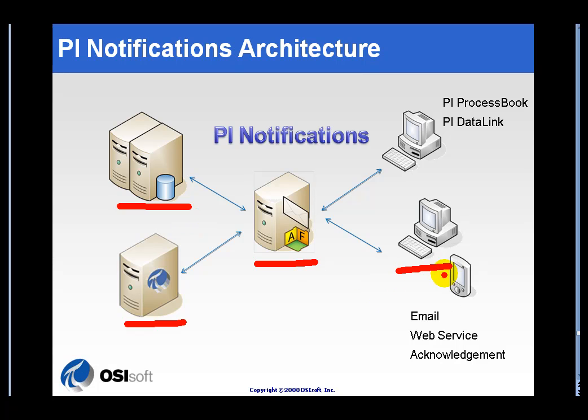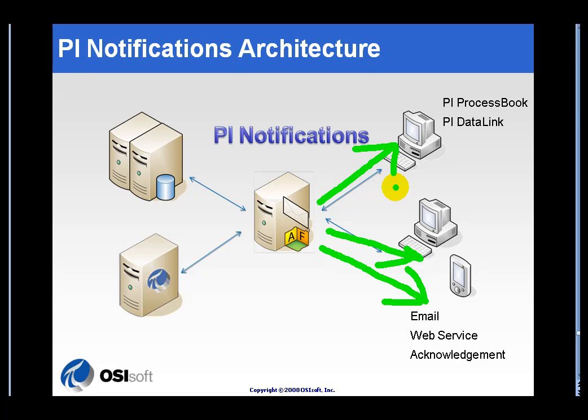In addition, we can send email. We can allow acknowledgments over the Internet. We support delivery channels such as Web Services and third-party delivery channels. The notification can come from the PI Notifications Machine out to email or out through a Web Service to another application. We've got client tools available, both ProcessBook and Datalink, to take a look at the notifications that are being sent, in addition to standalone applications for taking a look at notifications. That's roughly the architecture of PI Notifications.